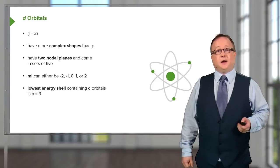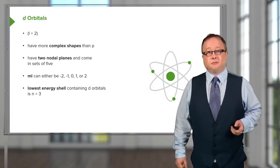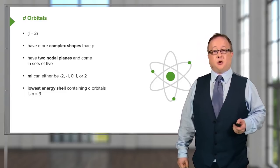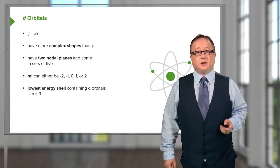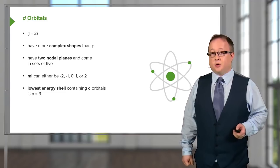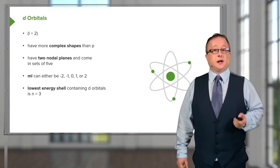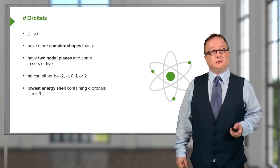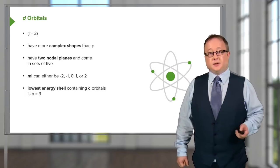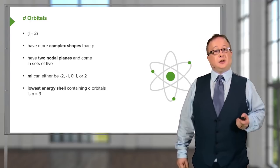D-orbitals have a more complex set of shapes and have the orbital quantum number of two. The D in D-orbital stands for 'diffuse'. They have two nodal planes and come in sets of five. The ML or magnetic orbital number can be minus two, minus one, zero, one, or two. There is actually an equation we'll come onto in the next lecture explaining how you can determine this yourselves. The lowest energy shell containing D-orbitals is n equals three; prior to that, they haven't been unlocked.